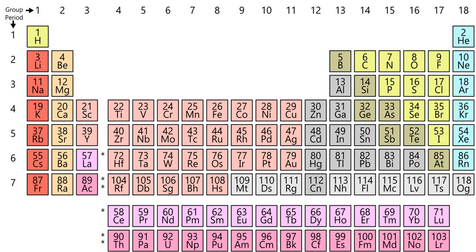One or more of the metalloids are sometimes classified as nonmetals. Among the reactive nonmetals, carbon, phosphorus, selenium, and iodine, which border the metalloids, show some metallic character, as does hydrogen. Among the noble gases, radon is the most metallic and begins to show some cationic behavior, which is unusual for a nonmetal.